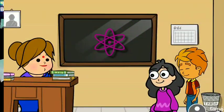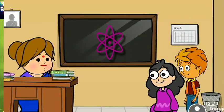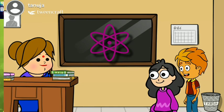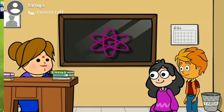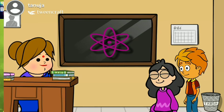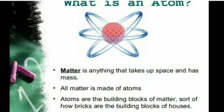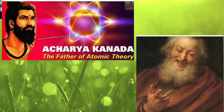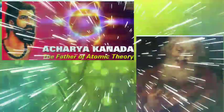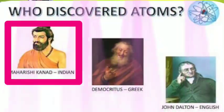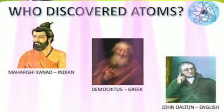Who discovered atoms? Teacher, Indian philosopher Kannad in 6th century BC discovered the atom. See students, Indian philosopher Kannad in 6th century BC stated that there is a limit to divide matter into small particles. The indivisible particles that constitute matter were named by Kannad Muni as Parmanu. He also stated that Parmanu is indestructible, that is, it cannot be divided.